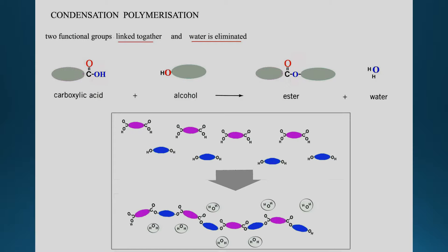In each bond, a water molecule is removed. These two functional groups bind together, and when they bind, a water molecule is produced. So for condensation polymerization — it can be quite a complex molecule beyond a Year 12 level — but you can identify it by looking at the linkage: if you see a water molecule is produced, you know this is a condensation polymerization.